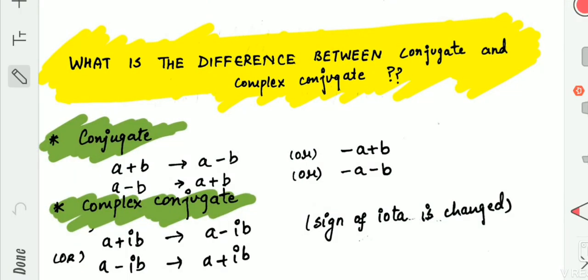Hello everyone, in this video we will discuss the difference between conjugate and complex conjugate. In conjugate, we can change the sign of any of the terms, but the signs will not get changed simultaneously. For an example,